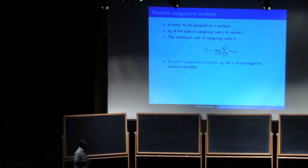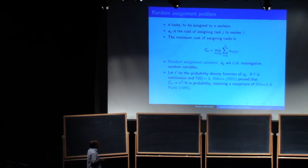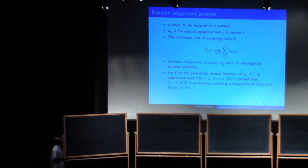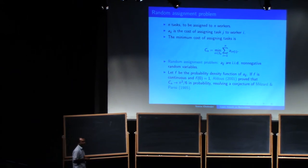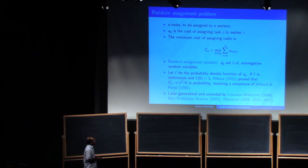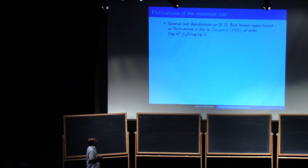So this has inspired also a large body of work. So suppose these aijs have a probability density f, which is continuous, and f(0) is 1. Under these conditions, Aldous showed that this cost actually converges in probability to zeta(2) and resolving a conjecture of Mezzard and Parisi. And this was later generalized and extended in these papers. And in particular, Wastlund has these extensions where this condition is not required. F(0) can vanish or blow up at zero, which gives very different behavior somehow.